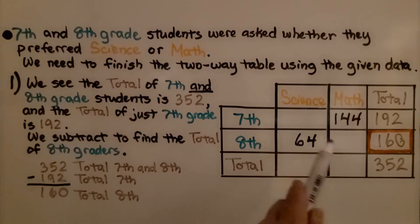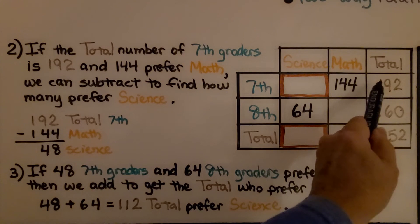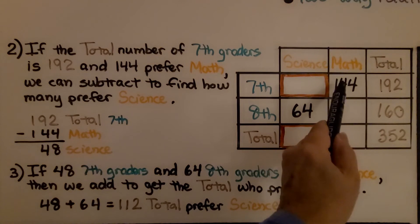Now we can work on the other cells that need to be completed. We can complete this cell. If the total number of 7th graders is 192 and 144 prefer math,